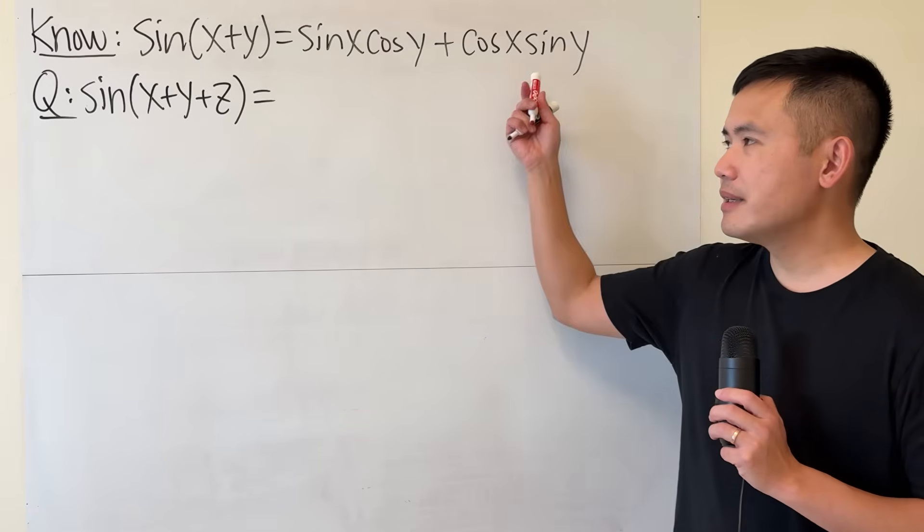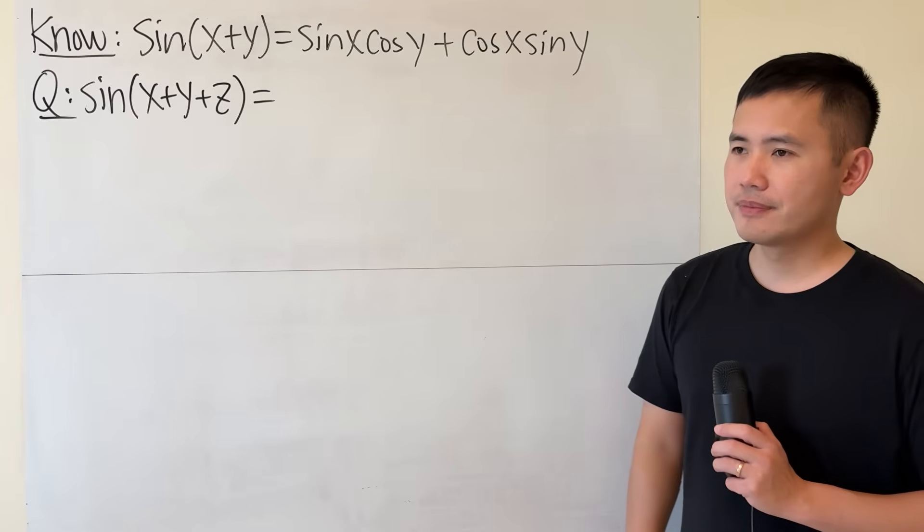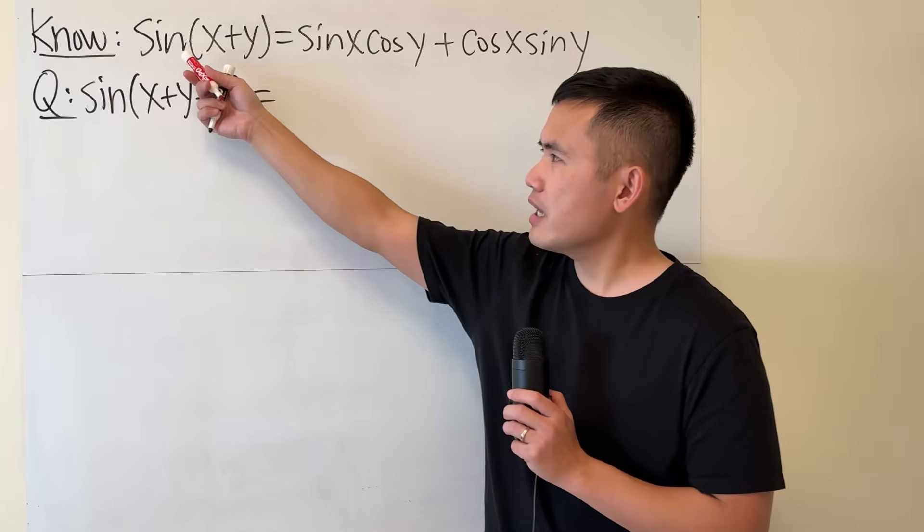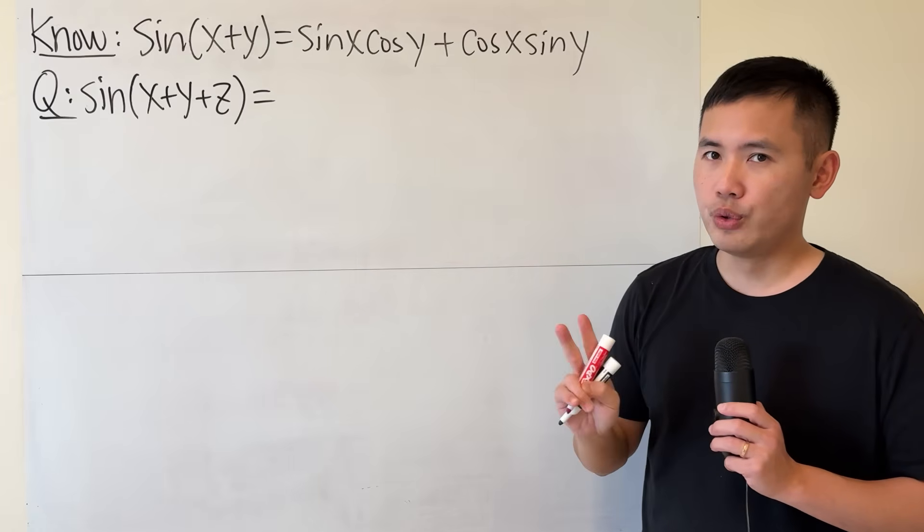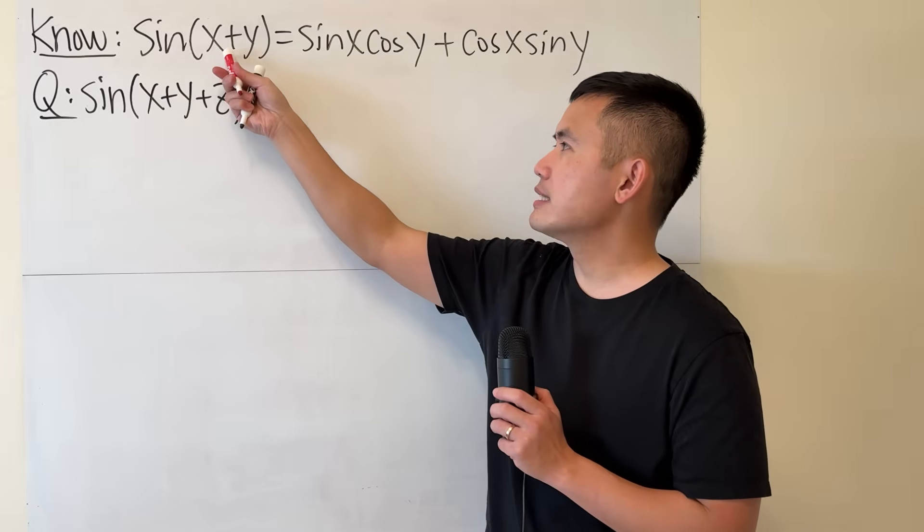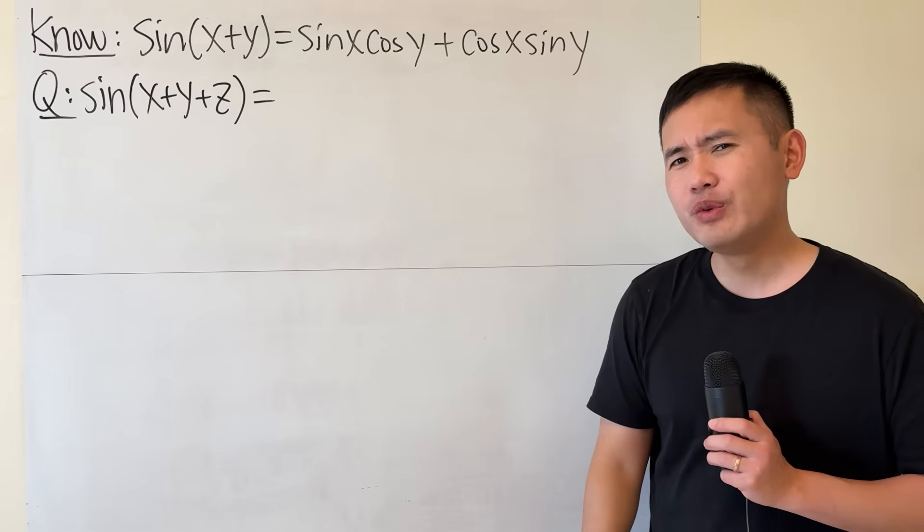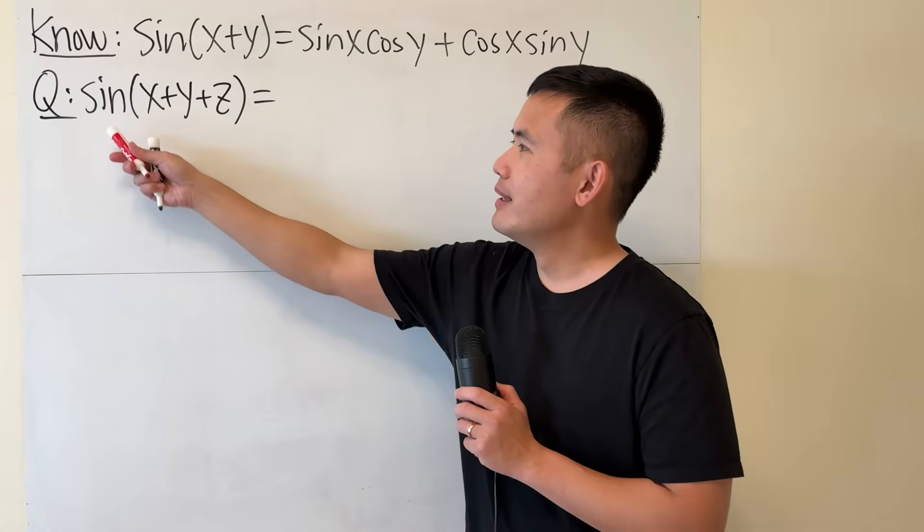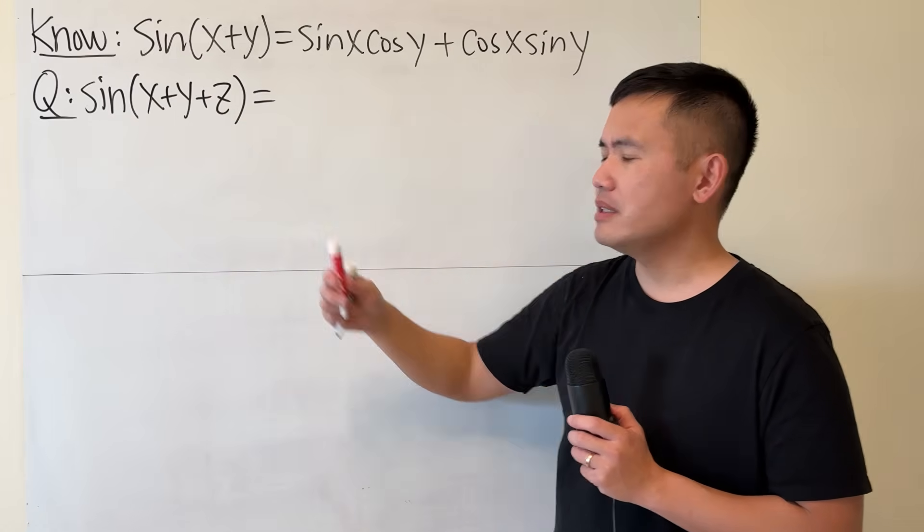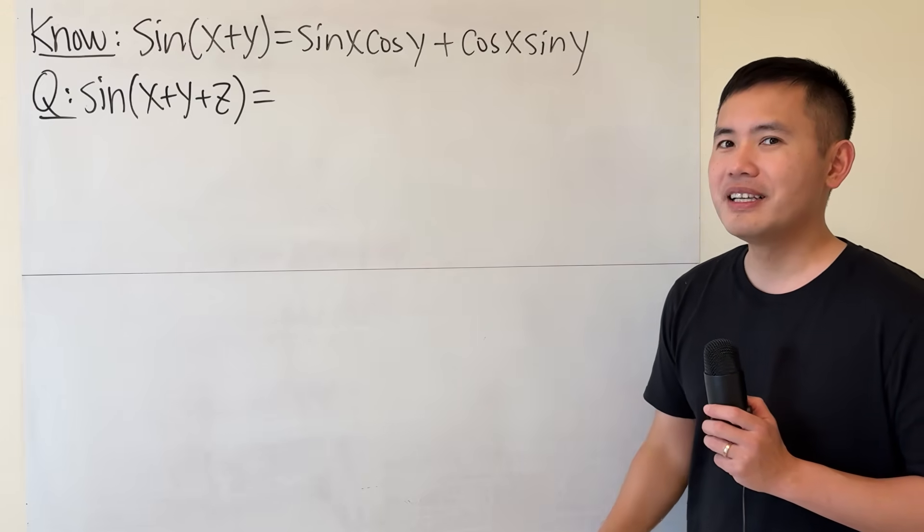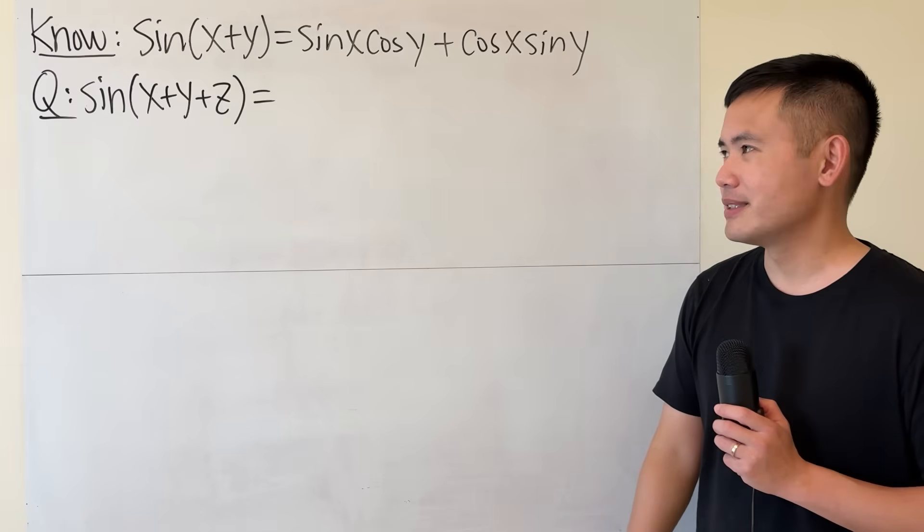So many of you guys have seen this angle sum identity for sine, but that's only when we have two things inside, namely x plus y. I wonder, what if we have three things though? Sine of x plus y plus z. What would that be? Well, I'll tell you the answer is actually very nice, so let me write it down for you guys right away.